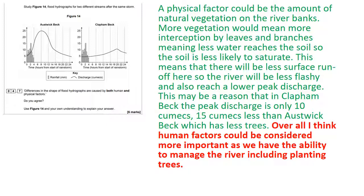A top-end skill: for 'do you agree?' questions, you can say yes or no, but you can also go further by stating which factor is most important — that shows evaluation. If the exam board puts in an explain question like this, you don't need to evaluate, but it certainly doesn't hurt your cause. For example: 'Overall, I think human factors are more important as we have the ability to manage the river, including the planting of trees.' It's just an extra twist the examiner can read and confirm you've agreed and justified your reason. Come and see us in HA if you have any questions — it's one of my favourite questions from the AQA board.